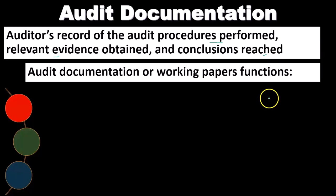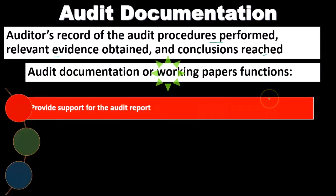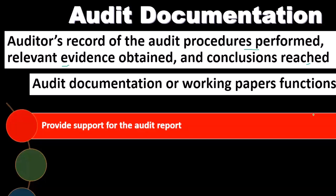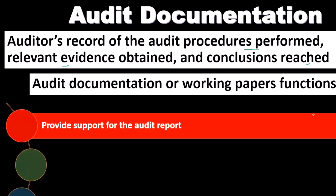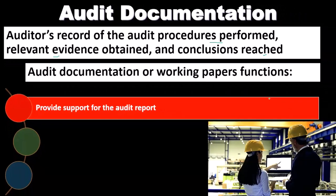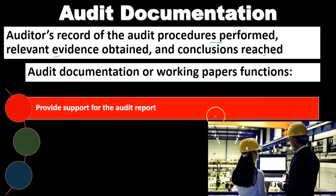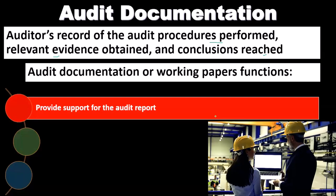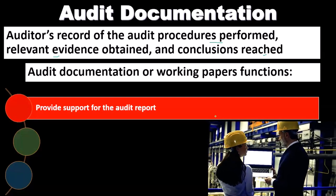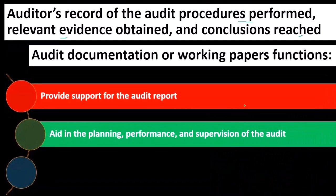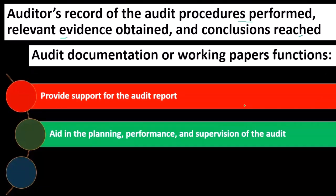Audit documentation, or working papers, has specific functions. We often call them the working papers — something that we put together on the audit side of things. We're going to include papers as part of our audit documentation, part of our evidence, and part of our support for our opinion. They provide support for the audit report. When we create the audit report, which provides our audit opinion, the documentation will, of course, support that opinion.